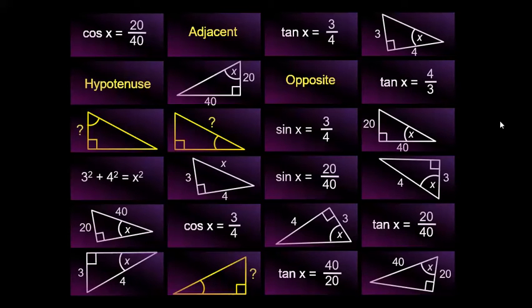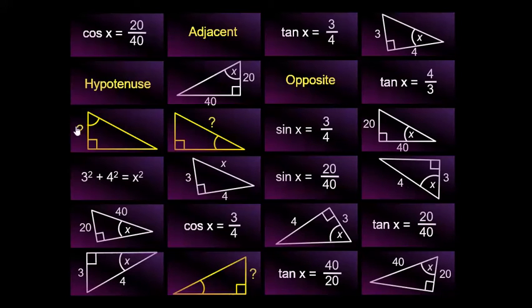So it's a traditional matching pairs game involving trigonometry. But the first thing that caught my eye about this is just the choice of questions. You can see you've got the same numbers appearing — you've got 3 over 4 with tan x, 3 over 4 with cos x, 3 over 4 with sin x, 20s and 40s. So straight away all the classic misconceptions are going to be addressed here.